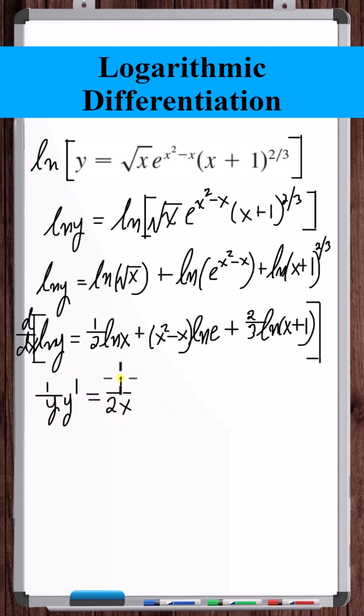The derivative of natural log of x is 1 over x. Natural log of e is equal to 1. The derivative of x squared minus x is 2x minus 1. The derivative of natural log of x plus 1 is 1 over x plus 1.